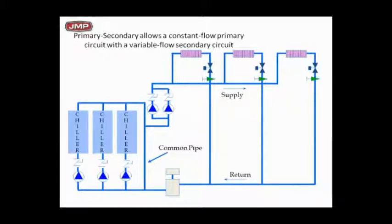Here's a typical one with primary-secondary chiller loop. I have three chillers, three pumps, common pipe, secondary loop with variable flow. I got constant flow on the chillers, variable flow on the secondaries.